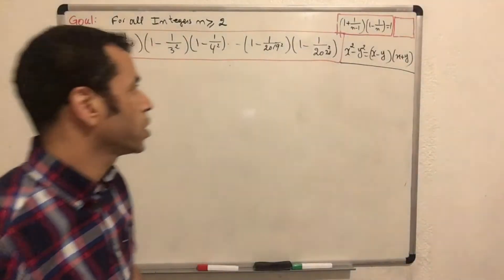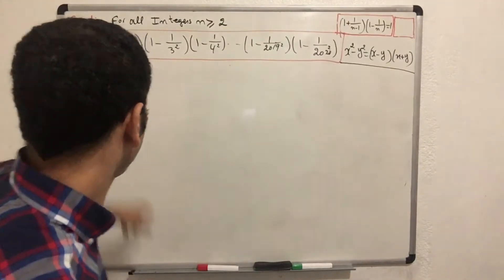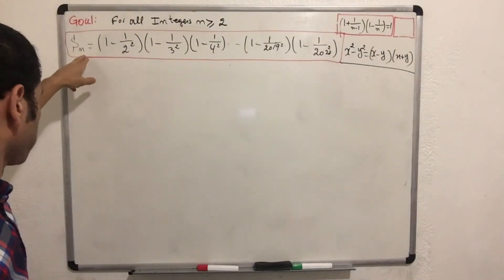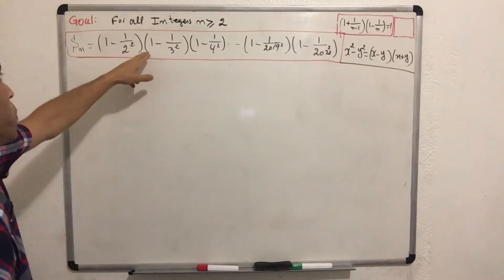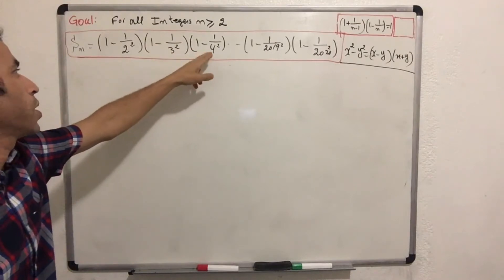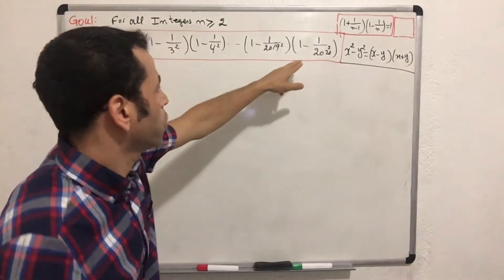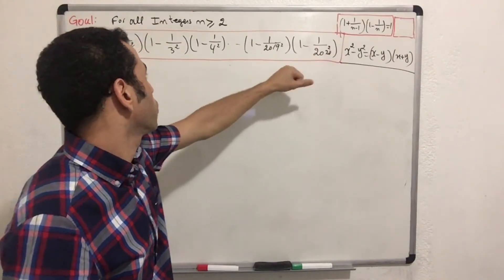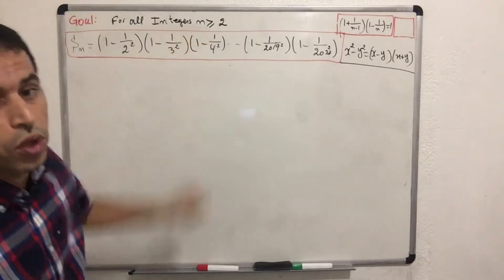Hi, good morning. In today's video, I'm going to evaluate this nice expression of product noted as S sub n, equal to 1 minus 1 over 2 squared, multiplied by 1 minus 1 over 3 squared, multiplied by 1 minus 1 over 4 squared, and so on. The last term is 1 minus 1 over 2020 squared, for all integers n greater than or equal to 2.